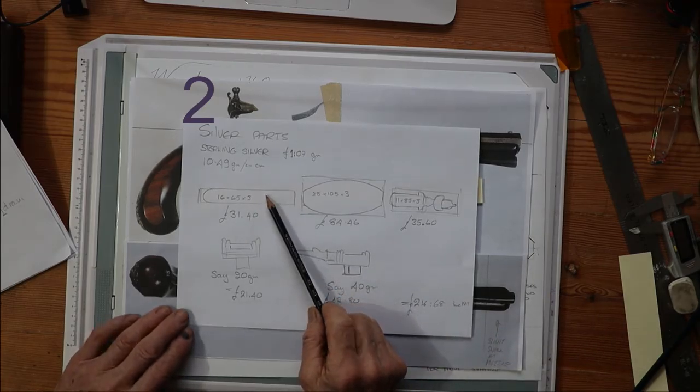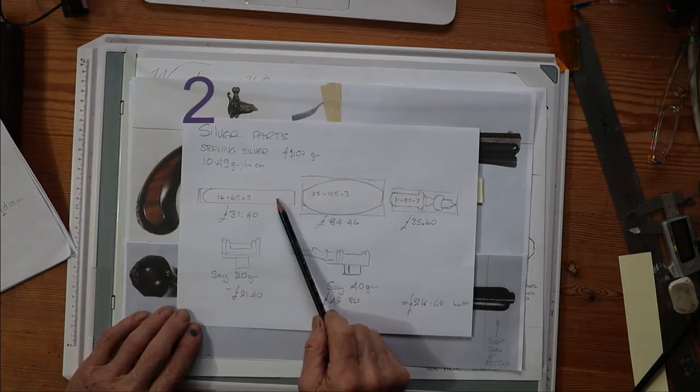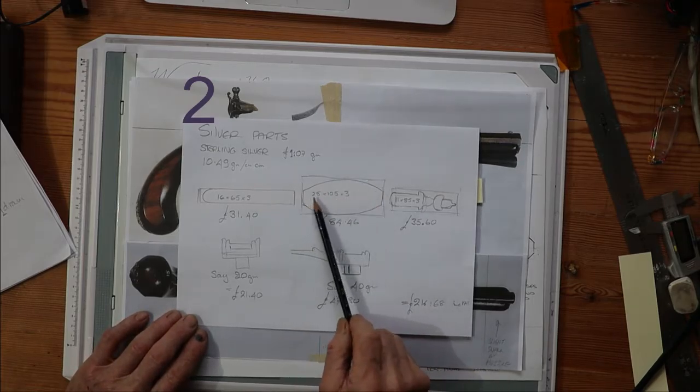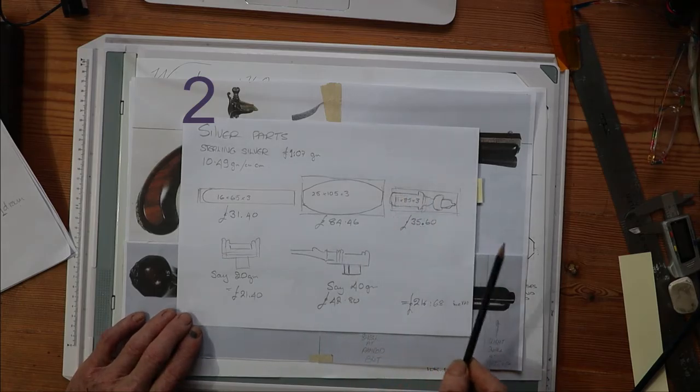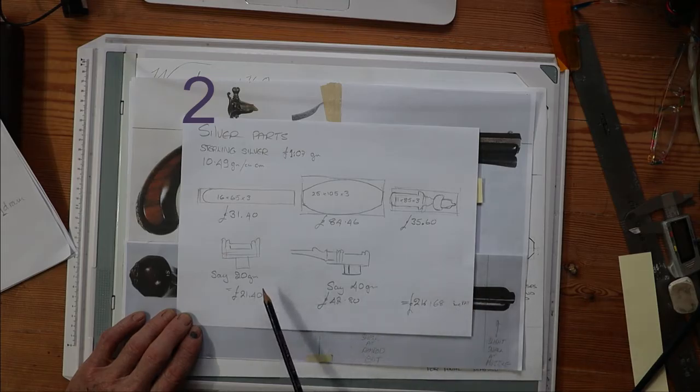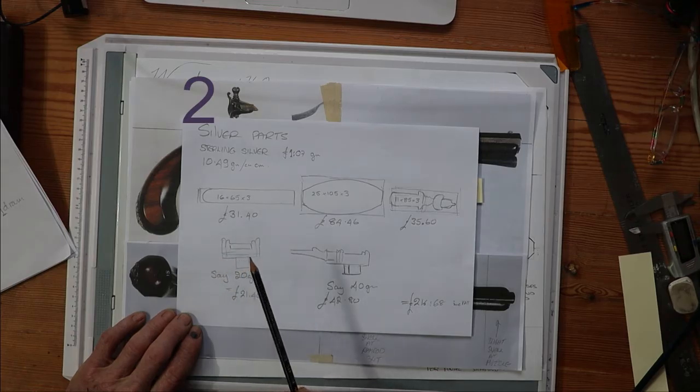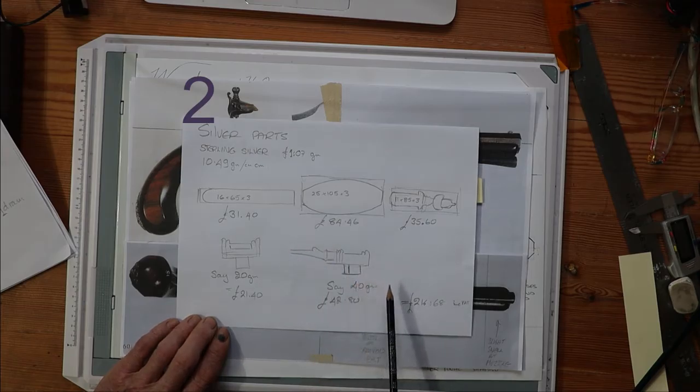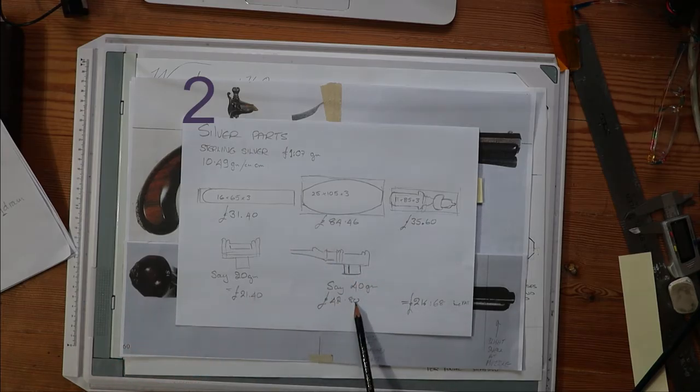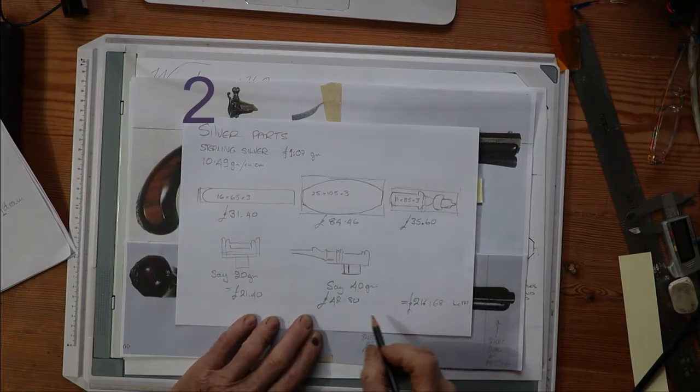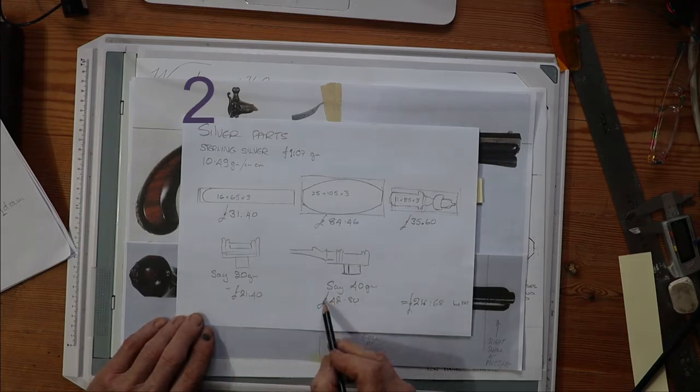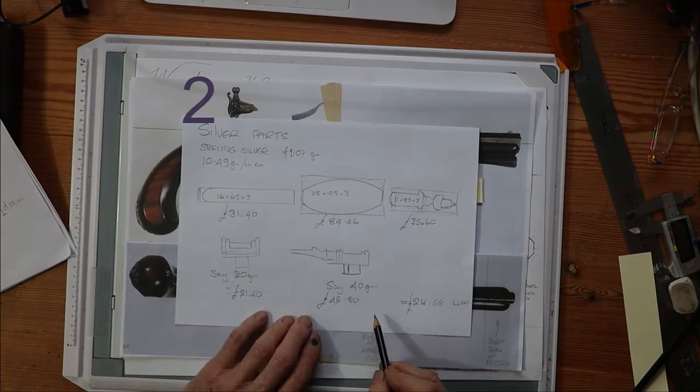So from the Cooks and website, you can just calculate, given the size of metal that you want, you can calculate the cost of it. So the bit for the butt was 31 pounds 40. The bit for the trigger guard is 84 pounds 46. The bit for the finial is 35 pounds 60. And then I reckon I need 20 grams to cast up the first ramrod pipe and say 40 grams to cast up the second one, and assuming that I'm paying the same sort of price for it as that.